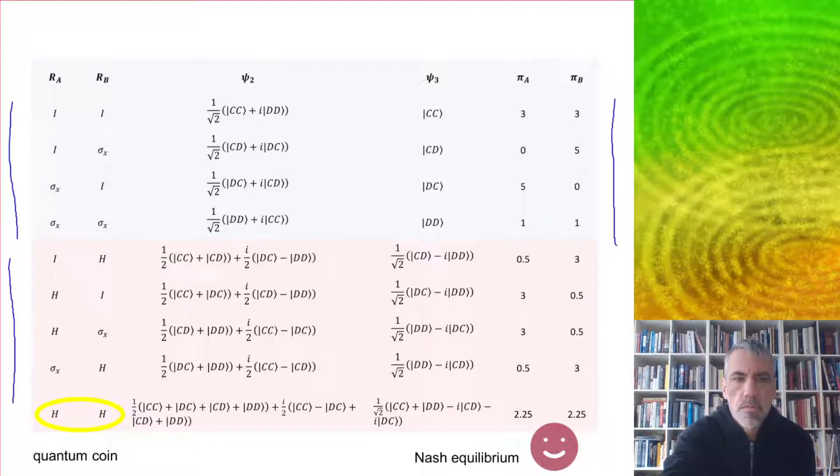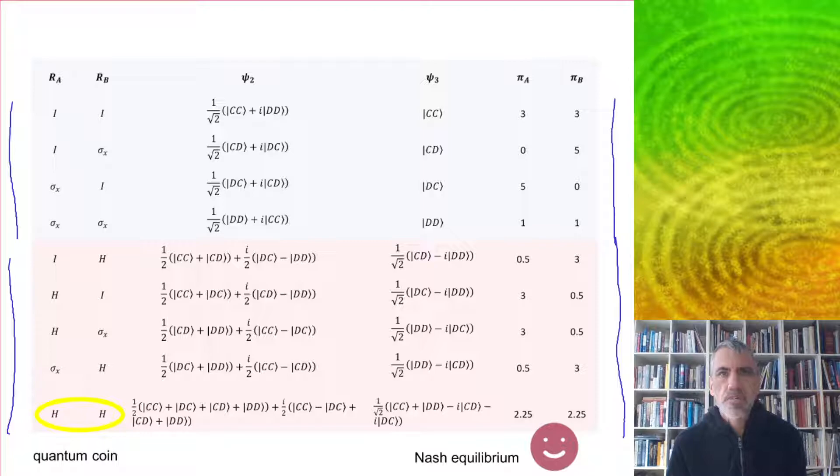When we have these extra quantum moves - we've just shown some of them - the players now have a choice of doing a mix of classical moves, but they're also allowed to do the Hadamard gate.